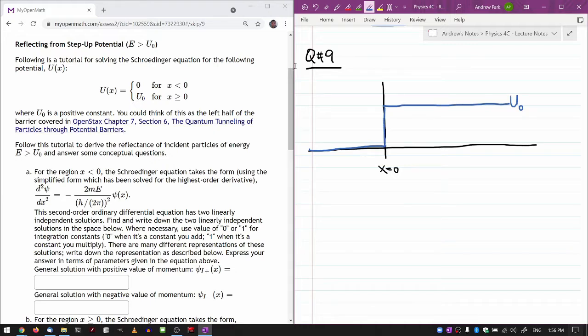I want to put x equals 0 somewhere reasonably in the middle. Think of this left half the barrier. Follow this tutorial to derive the reflectance of incident particles of energy E greater than U0. That's good to note. Let me just draw a line to indicate the energy of the incident particles.